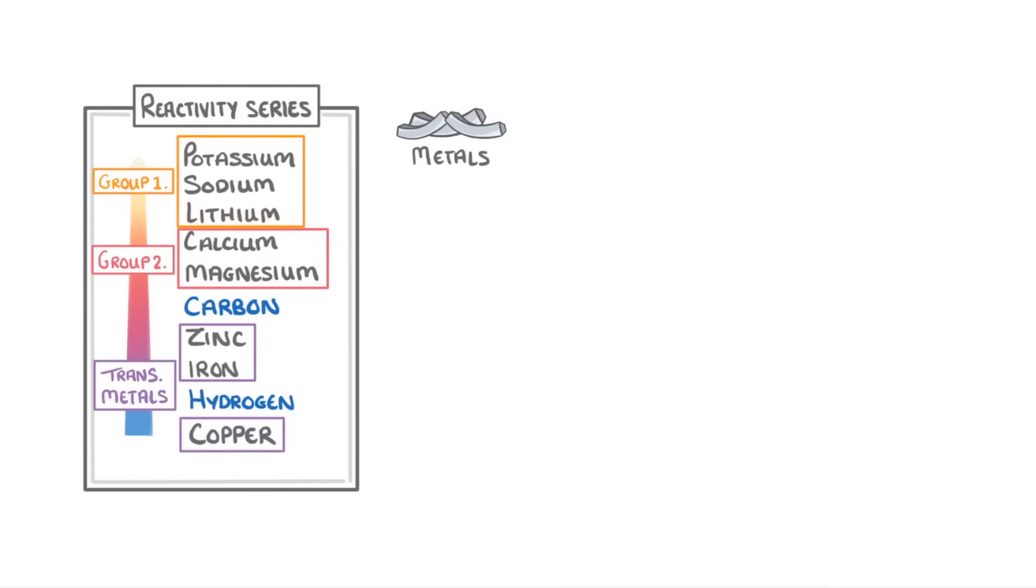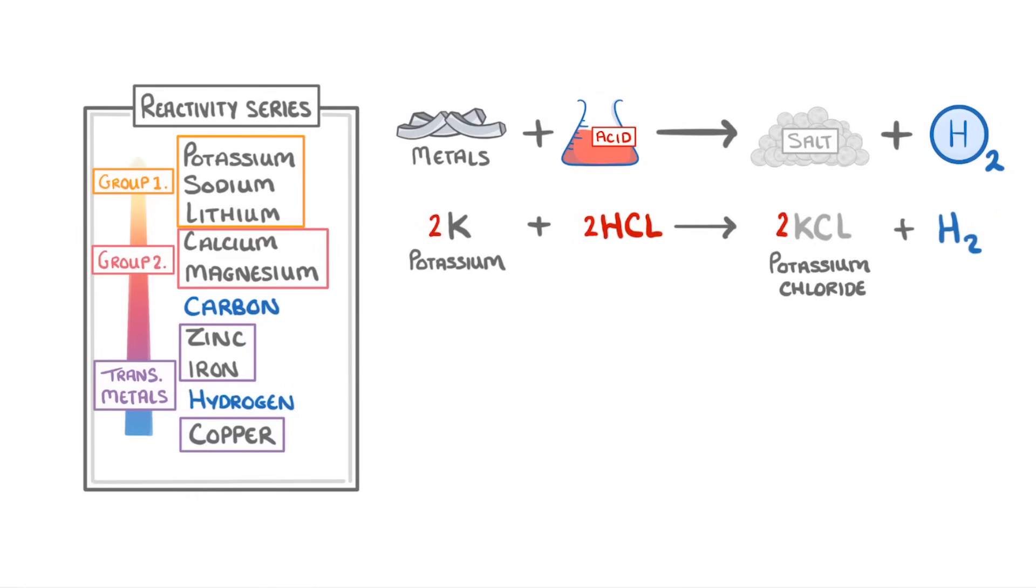If we react a metal with an acid, it will form a salt and hydrogen gas. For example, if we reacted potassium with hydrochloric acid, it would form potassium chloride and hydrogen.